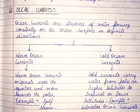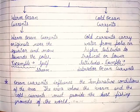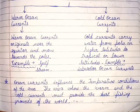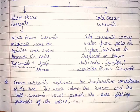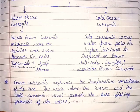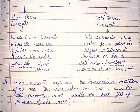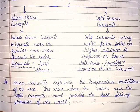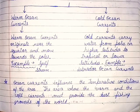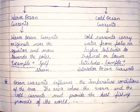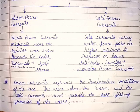Ocean currents influence the temperature conditions of the area. The areas where warm and cold currents meet provide the best fishing grounds of the world. Thank you, friends. Bye-bye.